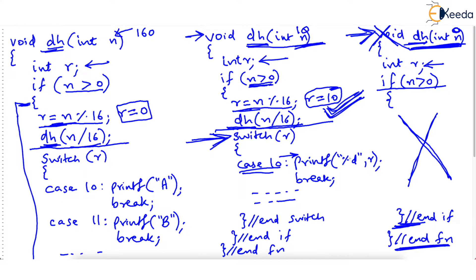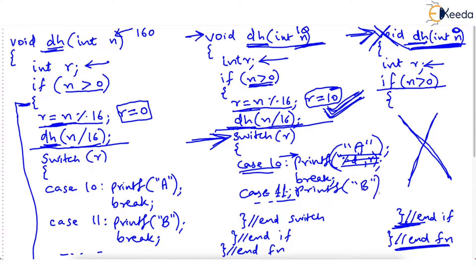As R is 10, it goes into case 10 and prints A in the printf. What if it were case 11? That's not so in this example, but then it would print B. Instead of printing the actual value of R, instead of 10 I print A, instead of 11 I print B, and so on. In this example, case 10 was true, so it has printed A — the first remainder printed is A.